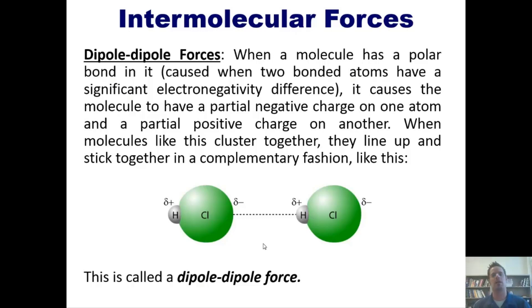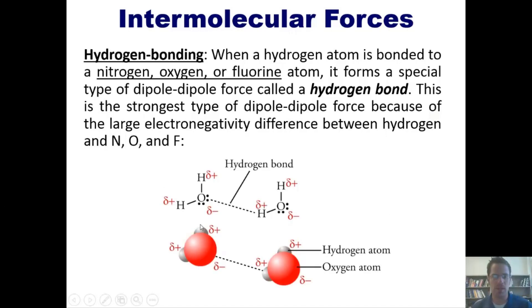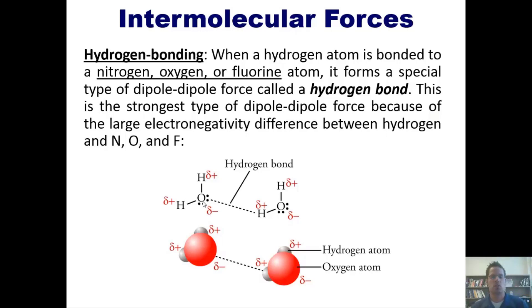The second intermolecular force is hydrogen bonding. When a hydrogen atom is bonded to nitrogen, oxygen, or fluorine — those three specific elements — it forms a special type of dipole-dipole force called a hydrogen bond. In water, for example, oxygen is so much more electronegative than hydrogen that it forms a very strong dipole — still covalent, not ionic, but with a much stronger partial negative on the oxygen and a much stronger partial positive on the hydrogen than in HCl.